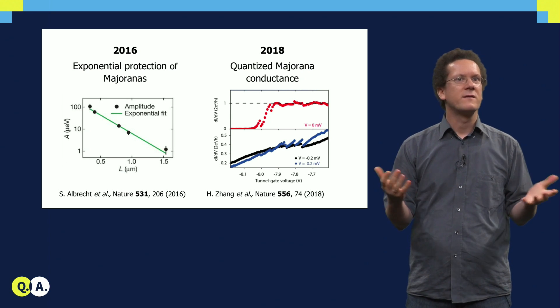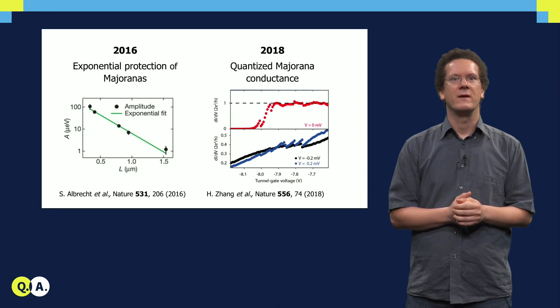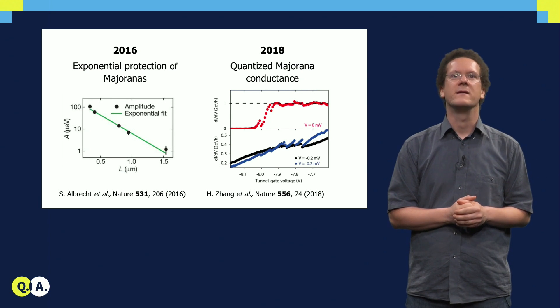If you take all of these experiments together, there is actually very strong evidence that we have Majorana bound states in these nanowire systems.